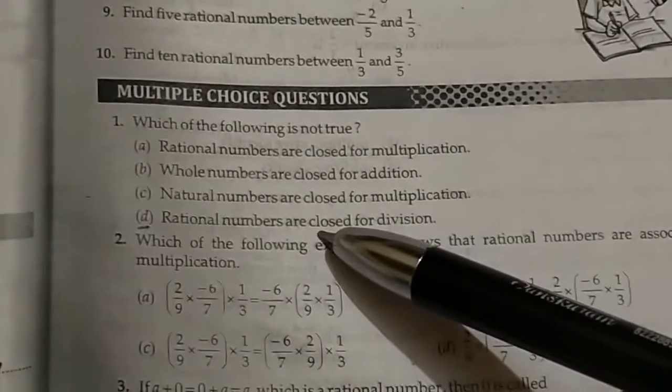This one is not true: rational numbers are not closed for division. Rational numbers are not closed, so this statement is not true.